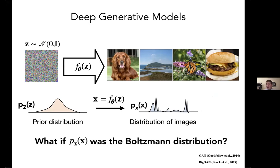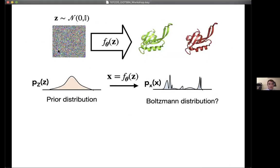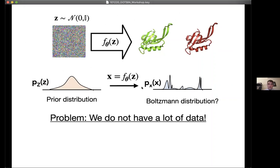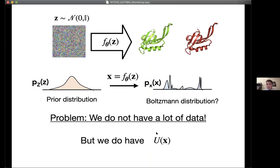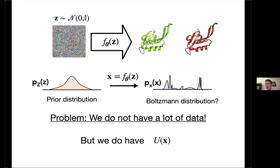We have a transformation from latent space to configuration space x through a neural network. The problem is that unlike images, we don't have a lot of data from the Boltzmann distribution of the system — if we already had that, we wouldn't have a problem. However, we do have access to the potential energy function, which is something not traditionally available in machine learning. To train using this energy model, we need the transformation to be invertible — going from latent space to x and back — which most neural networks are not.